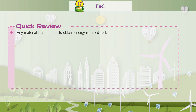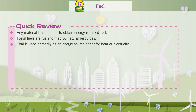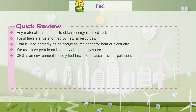Quick Review: Any material that is burnt to obtain energy is called fuel. Fossil fuels are fuels formed by natural resources. Coal is used primarily as an energy source, either for heat or electricity. We use more petroleum than any other energy source. CNG is an environment-friendly fuel because it causes less air pollution. Diesel fuel is a little cheaper than petrol.